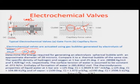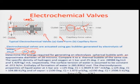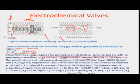The goal is to design an actuator or valve based on electrochemistry as shown in the two cases above. We want to determine the energy required to generate an electrolysis-driven spherical bubble with an approximate diameter of 28 microns, and compare it to generating an equivalent bubble thermally — by heating and vaporizing. What is the difference in energy between the electrochemical and thermal cases for the same bubble size?